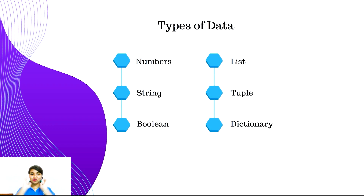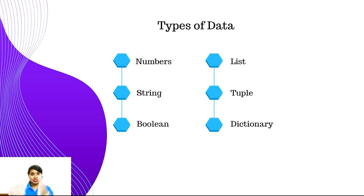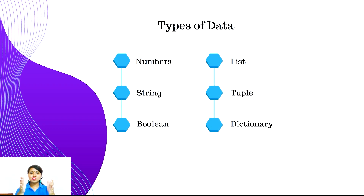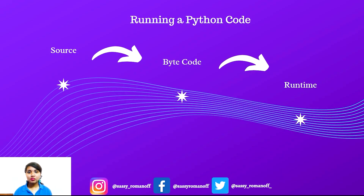Now comes one of the main concepts in Python: types of data. The data types available are numbers, string, and boolean — consider these as a set of characters. Numbers cover decimals, fractions, complex numbers, and more. String holds characters. Boolean is true or false. Then list, tuple, and dictionary are collections of elements — collection of variables, collection of data. They each have their own characteristics and their own way of being defined.